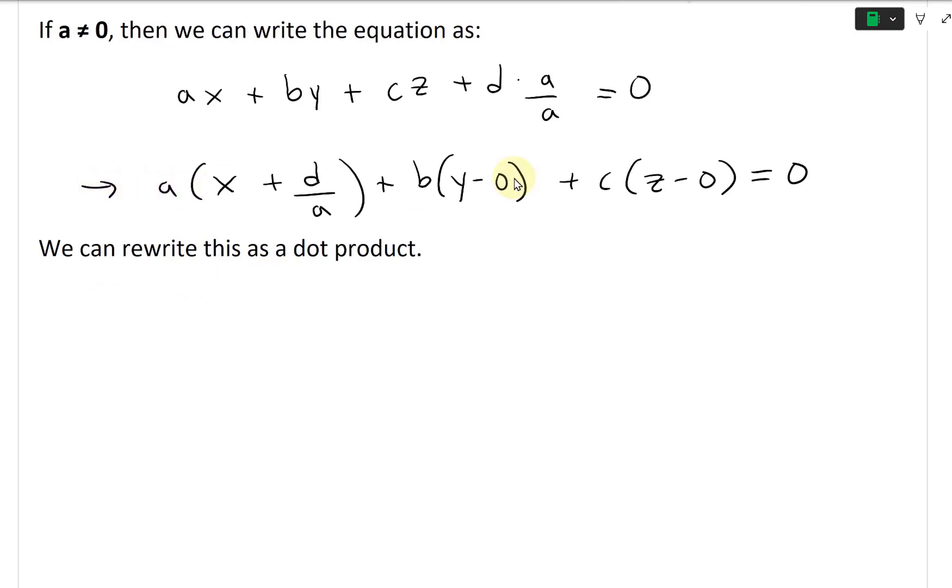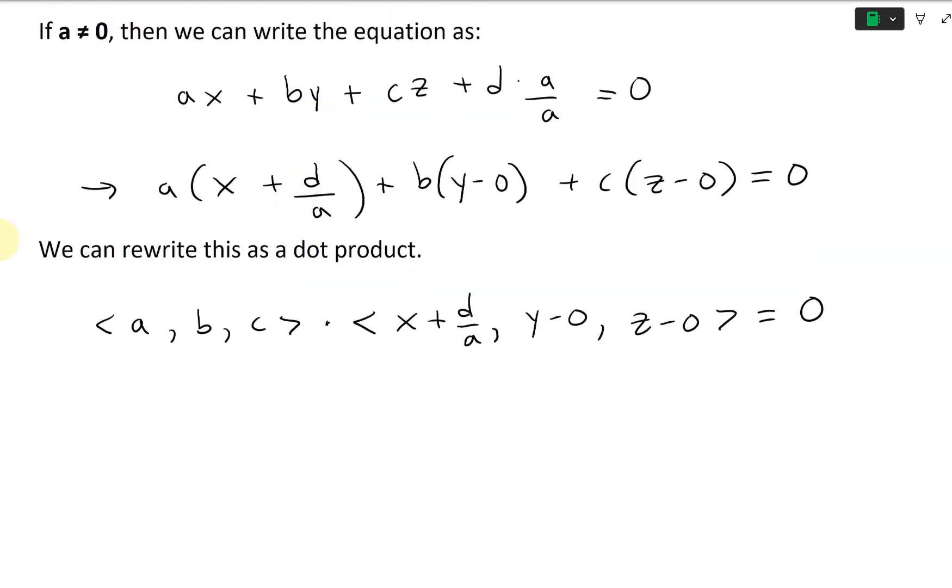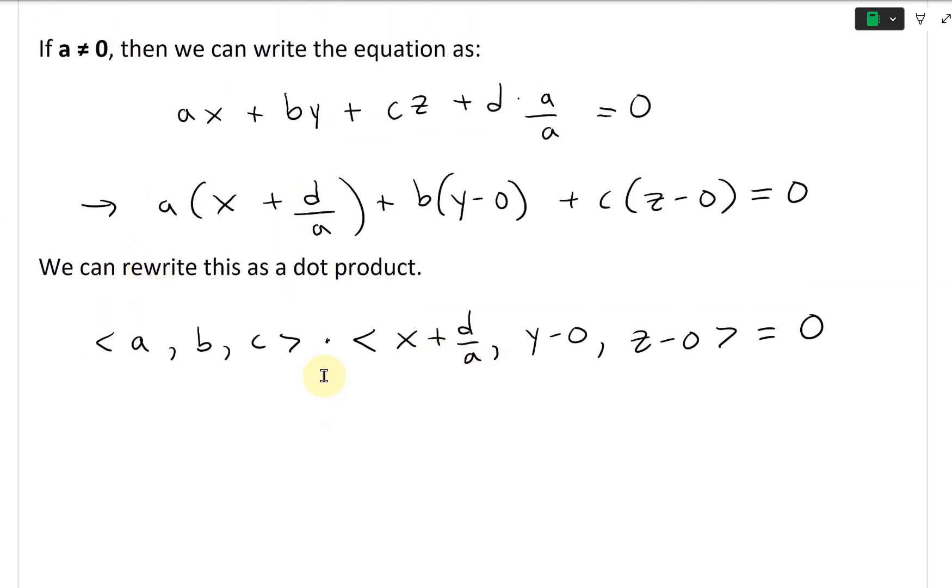Now we can rewrite this as a dot product. This is the same thing as <a, b, c> dot <x + d/a, y - 0, z - 0> equals zero. When you take the dot product, you multiply a inside this, b inside this, and c inside this, which gives us the top part.